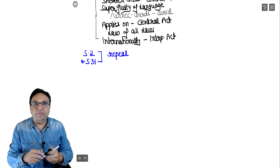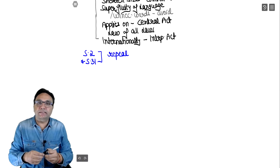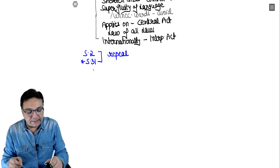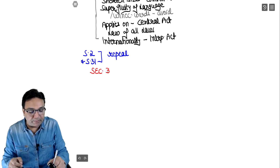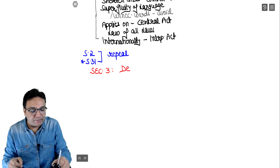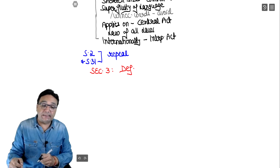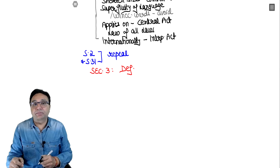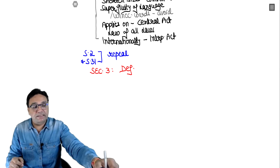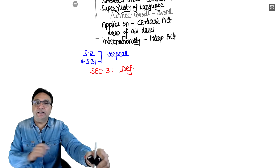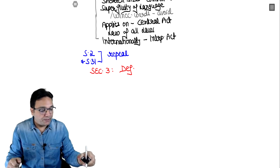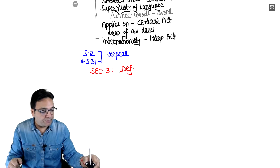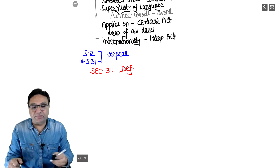Those definitions total 66, but in our CA Inter course, when we look at the study material, around 28 definitions - exactly 28 definitions - we need to study. The definitions in our course start in alphabetical order: A, B, C, D. So we will start with A. Related to A, we have two definitions in our course.